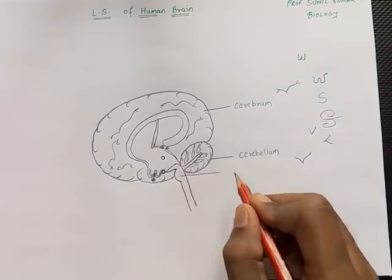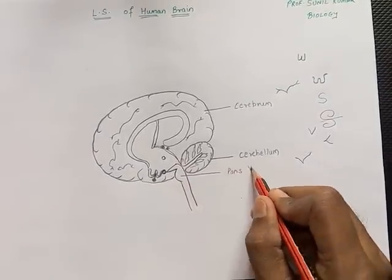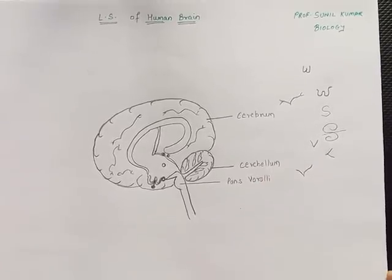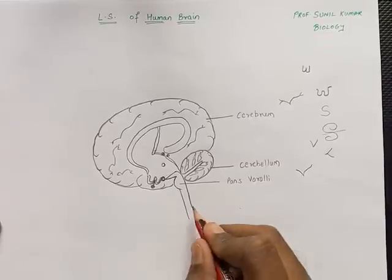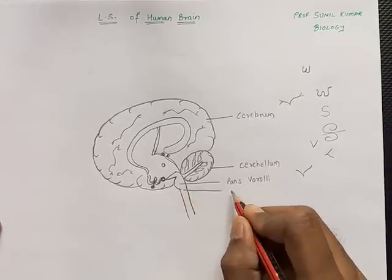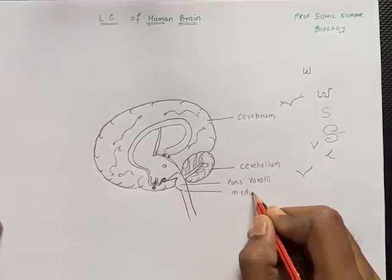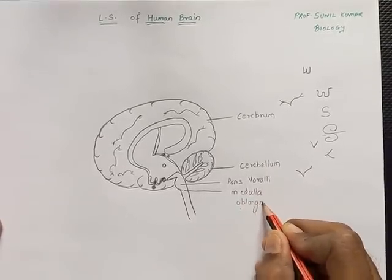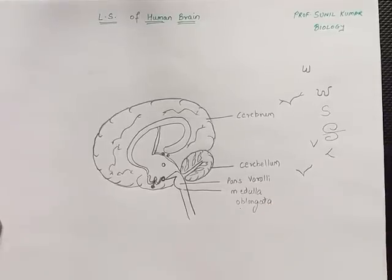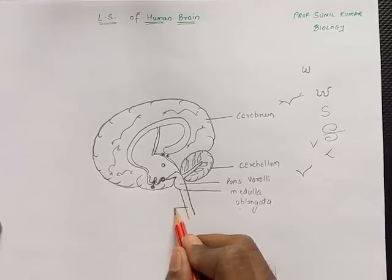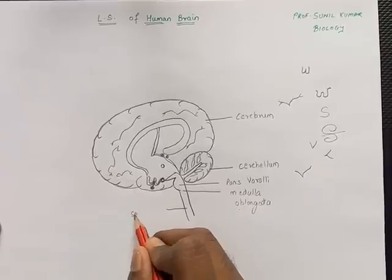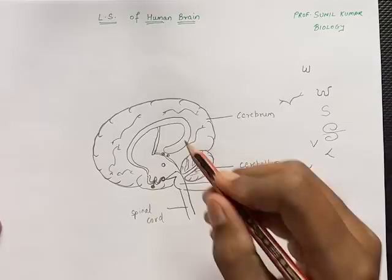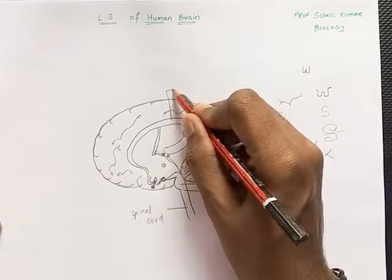This part is called pons varoli, basically responsible for the reflex action of breathing. This lower-most portion is the medulla oblongata — one of the most important parts of the brain, because a sudden injury to the medulla oblongata can even lead to death. The part extending here is called the spinal cord — basically an extension of the medulla oblongata.